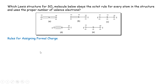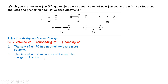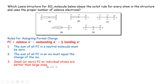Let's review the rules for assigning formal charges. Formal charge can be calculated using the number of valence electrons, subtracted by the non-bonding electrons, and subtracted by one half of the bonding electrons. The sum of formal charges for a molecule must equal zero, and for an ion must equal the charge of the ion. Lower formal charge values are better, and a negative formal charge must reside on the most electronegative atom.